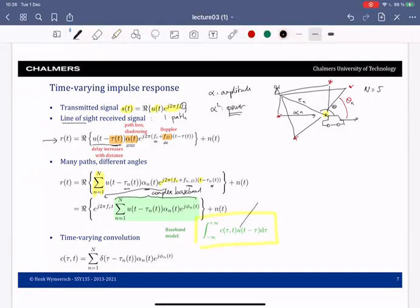Now what we would like is to have an expression as we've seen in the first lecture of this form, where you have the transmit signal and then you have the time-varying channel. Now you can easily see that the only possible expression for this c(tau, t) is given here. It is the same as what is in the green box, so a superposition of paths. The only thing that's different is that I have these delta functions here, so the channel is basically a sequence of pulse impulses with different delay, different amplitude, and different phase.